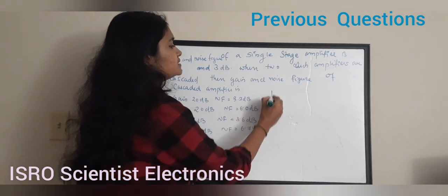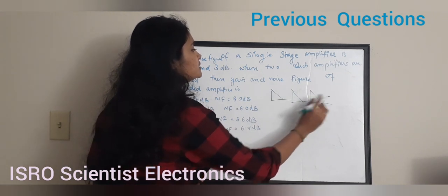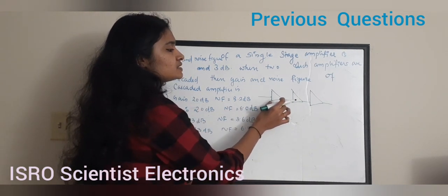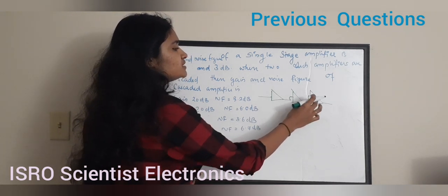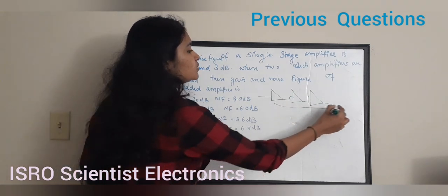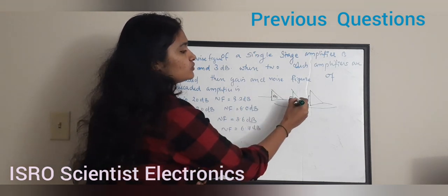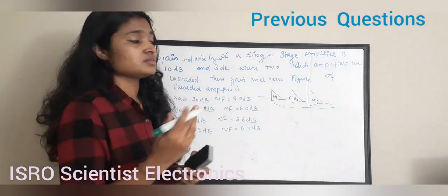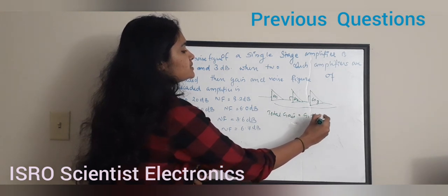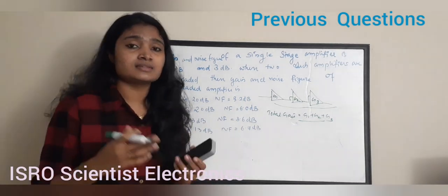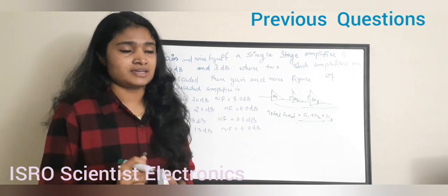A cascaded amplifier means we take amplifiers and cascade them — the output of the first amplifier feeds the input of the second stage, and so on. If the gains of the amplifiers are G1, G2, G3, then the total gain is G1 + G2 + G3. We cascade amplifiers to increase the overall gain.